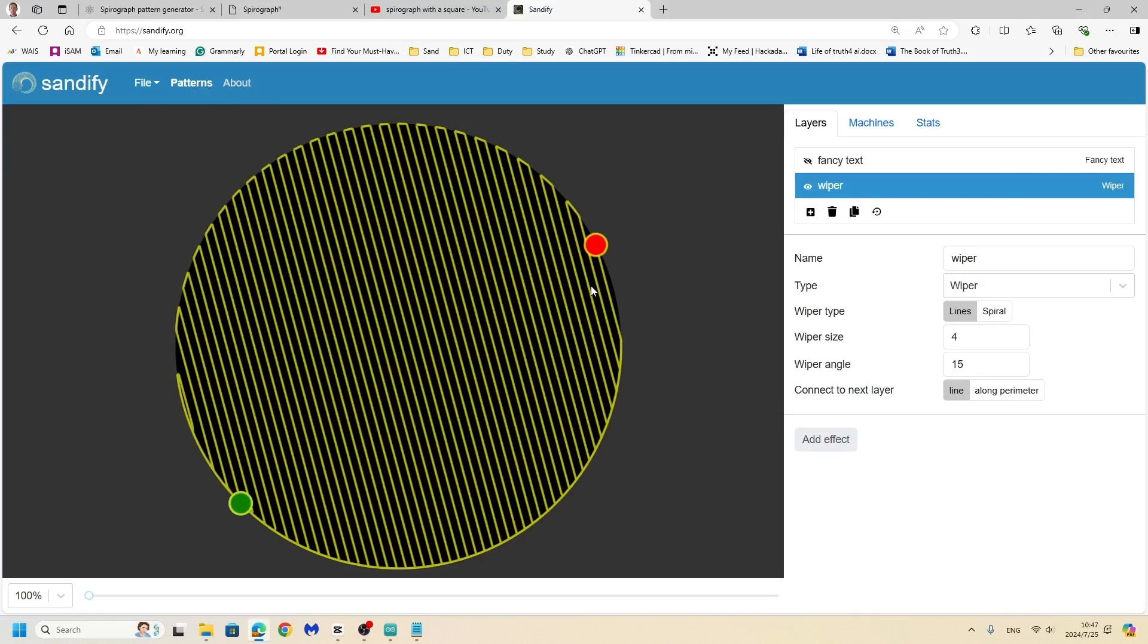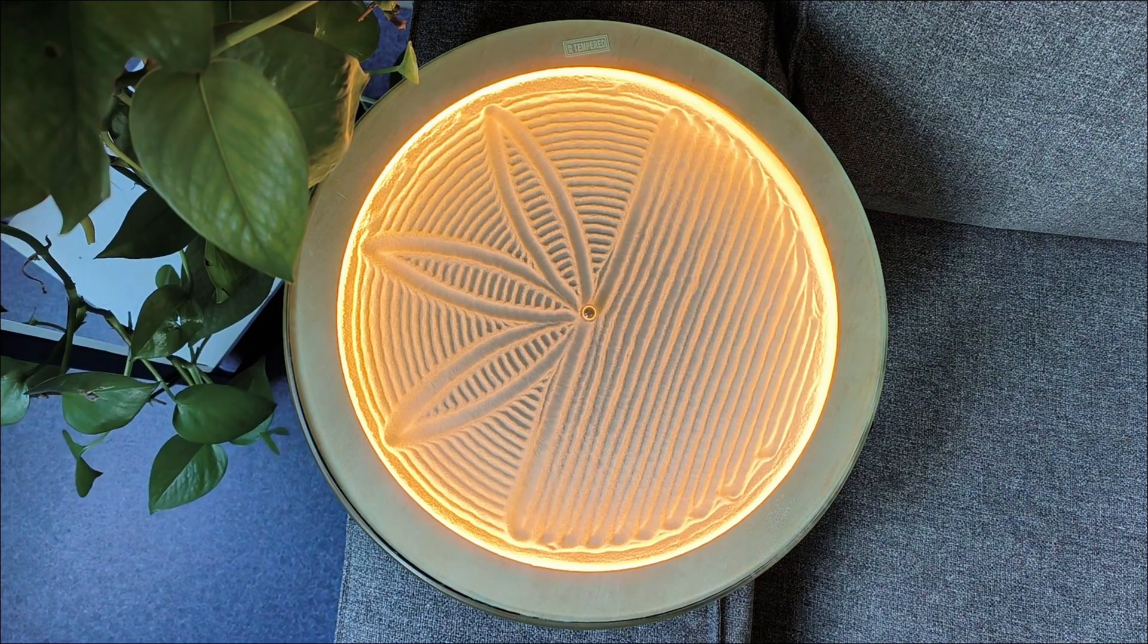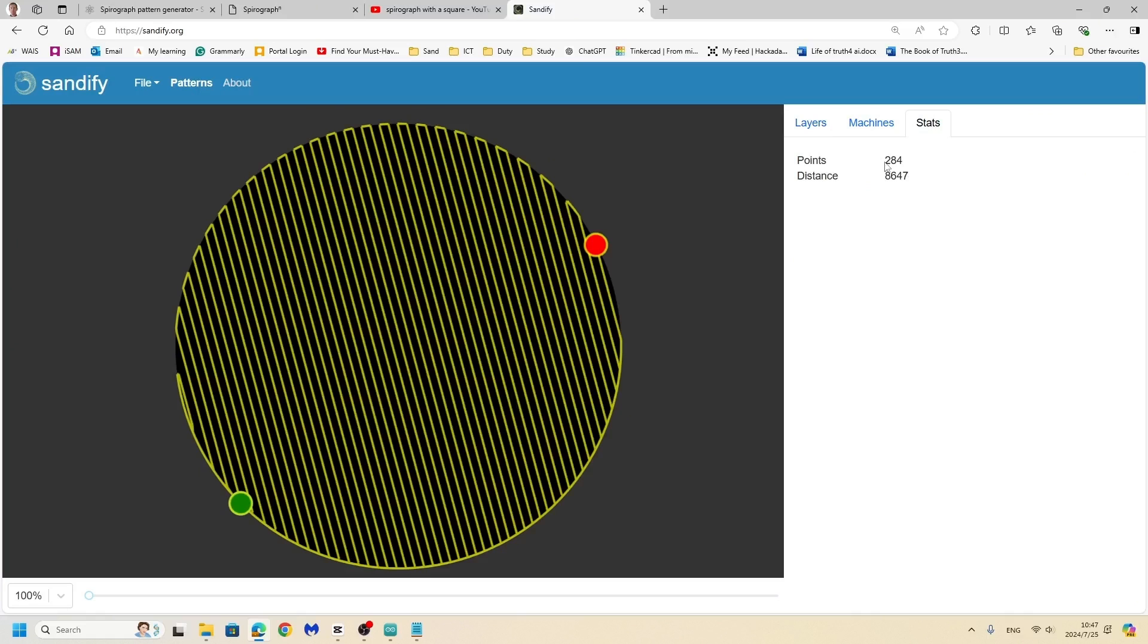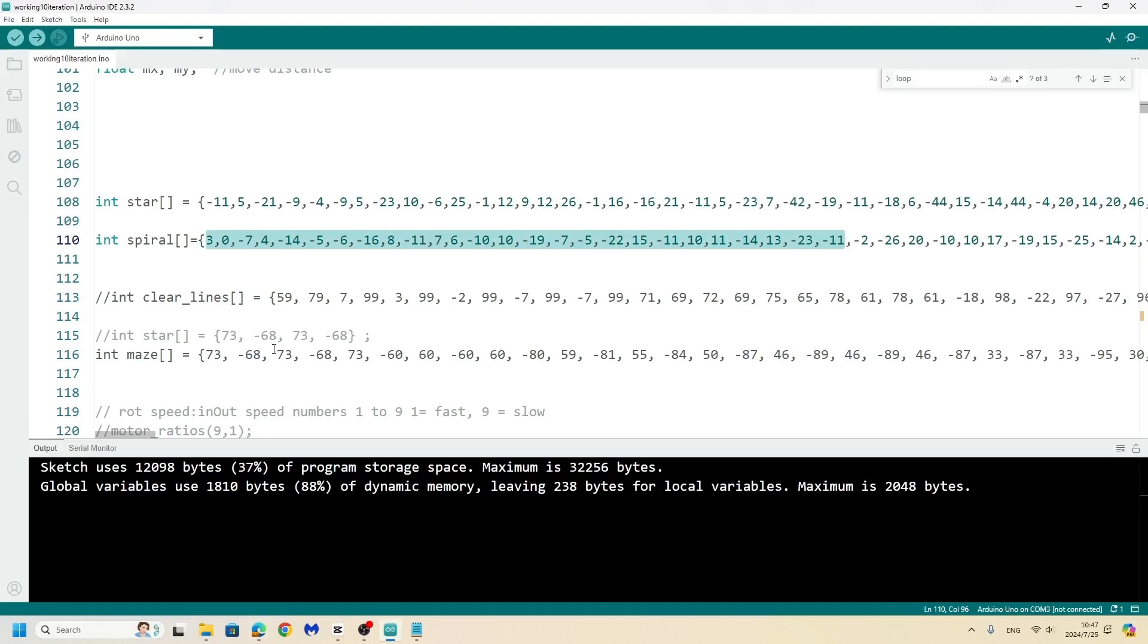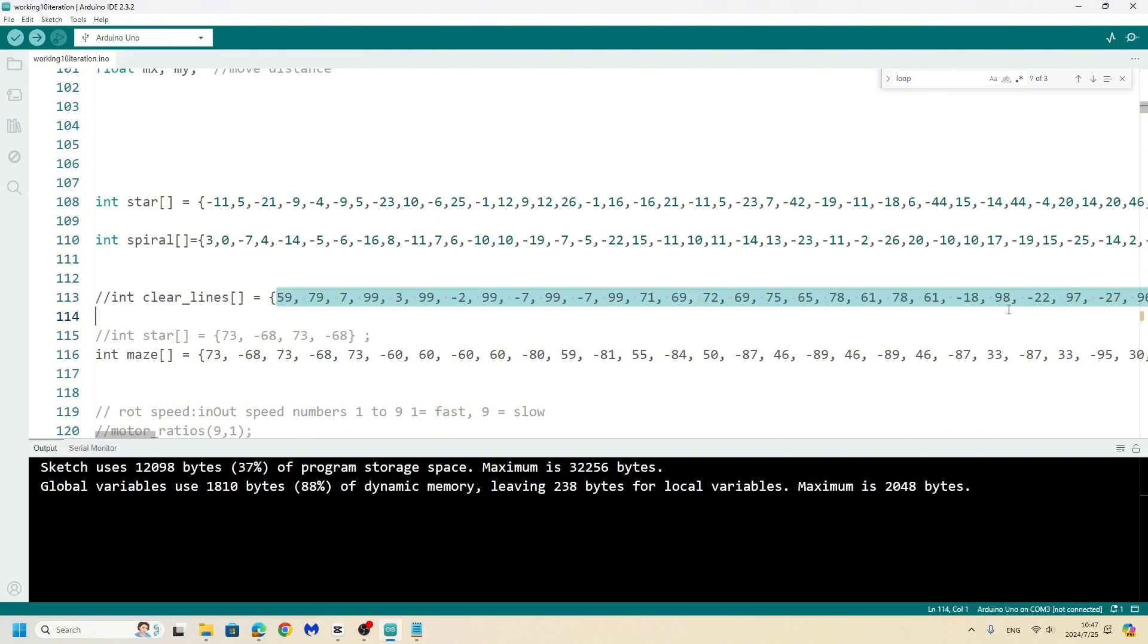There's a wiper function in sandify that draws a back and forth pattern to erase the function. But if you click on the stats we have a little issue. It takes 284 points, and that's quite a bit of data. We don't have too much RAM. My global variables are using 88 percent.